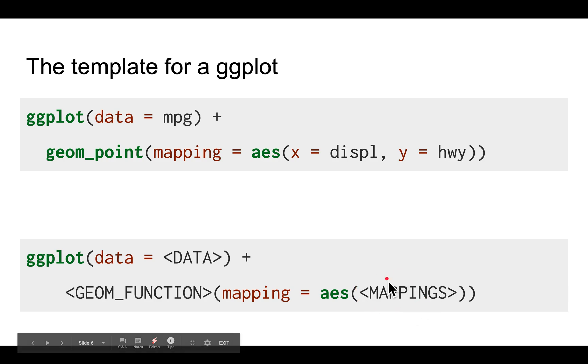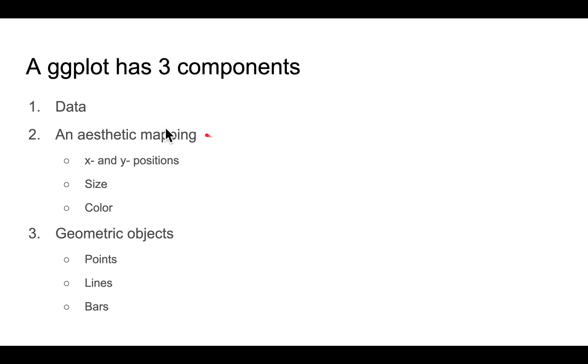So ggplots basically contains three things: the data, the aesthetic mapping, and the geometric objects. And we'll be going through what these are in the next few slides.